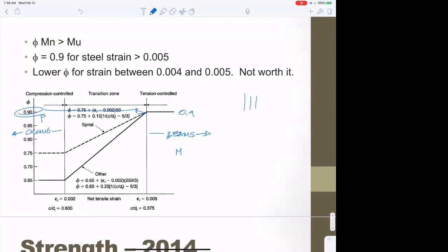Let's say you have a column - if the confining steel is a spiral, you have a phi of 0.75. If you have a square column with confining steel in the form of hoops, you get phi of 0.65.